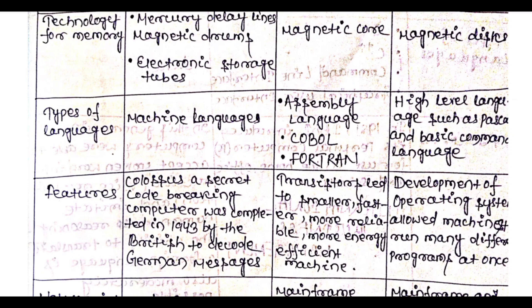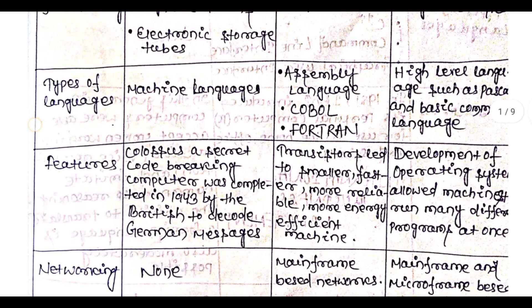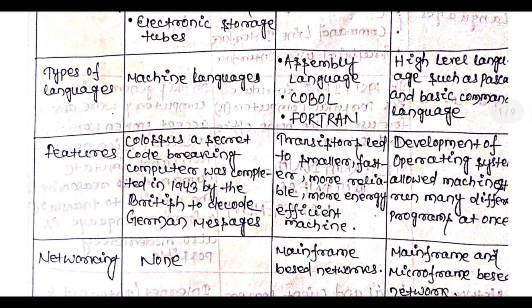Looking at the types of programming language used: the first generation used machine language; the second generation used assembly language, COBOL, and FORTRAN; and the third generation used high-level languages such as Pascal and BASIC.